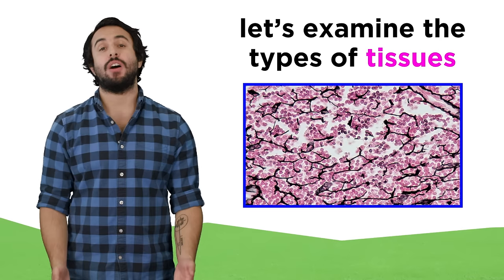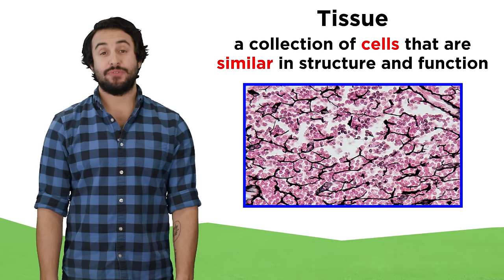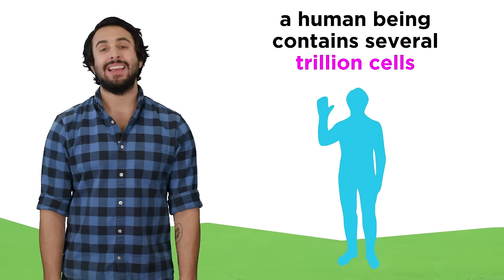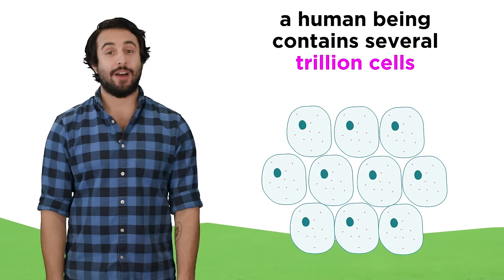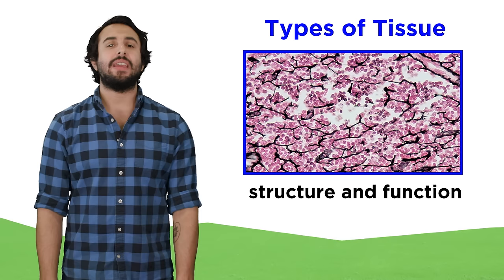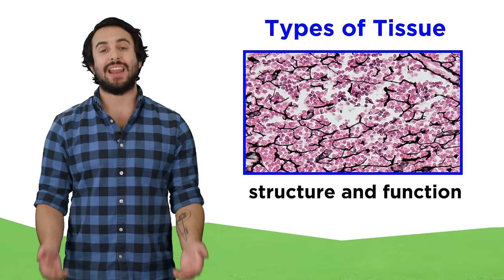Tissues are collections of cells that are similar in structure and perform a common or related function. This is a very important feature in any multicellular organism, because something like a human being contains trillions of cells. If they were all the same, we could not be so complex, so it is the fact that cells can become specialized that allows for the sophisticated appearance and behavior of a human. It will be extremely important to recognize different types of tissues and know their features, because every part of the body we will be looking at will be made of different combinations of these types of tissues.